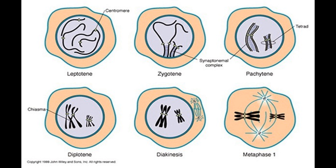A mnemonic for this: 'Led Zeppelin Plays Drums Daily.' During leptotene, the chromosomes begin to condense and match up with their homologous pairs. In zygotene, homologous chromosomes line up their homologous sequences and the sequences adhere to each other via synapsis, forming the synaptonemal complex. In pachytene, recombination nodules form on the synaptonemal complex to facilitate the crossing over of genetic sequences. During diplotene, the synaptonemal complex breaks down and sister chromosomes are separated. Lastly, in diakinesis, the nuclear envelope breaks down and centrosomes move to the poles, just like in mitotic prophase.